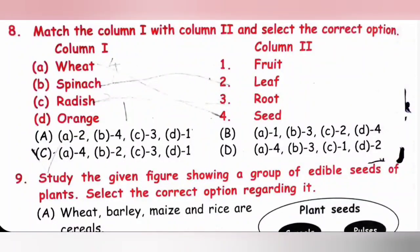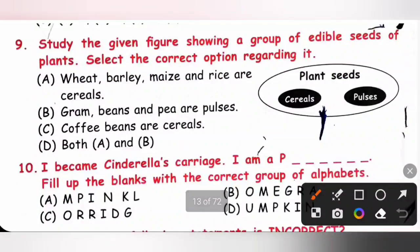Ninth one, study the given figure showing a group of edible seeds of plants. Select the correct option regarding it. Please pause the video and check the given Venn diagram. Plant seeds, cereals and pulses. We know the dry seeds of some plants are called food grains. Cereals and pulses are called food grains. The seeds of wheat, barley, maize and rice plants are cereals. So option A is correct. And seeds of plants such as pea, gram, beans are pulses. So option B also correct. So both option A and B. Option D is the correct answer.